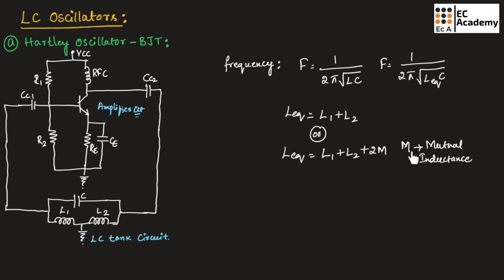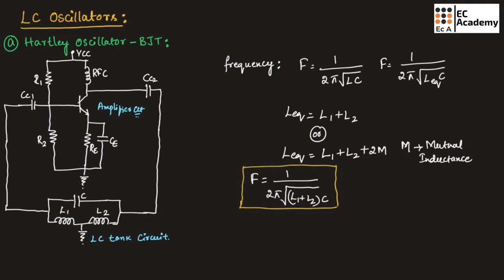If the mutual inductance is not given, then F = 1 / (2π√((L1 + L2) × C)). The gain of the Hartley oscillator should always be greater than (L1 + M) / (L2 + M). If mutual inductance is not given (M = 0), then gain should be greater than L1 / L2, or equivalently beta > L1 / L2.